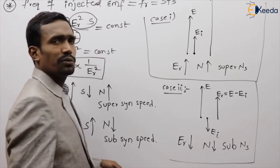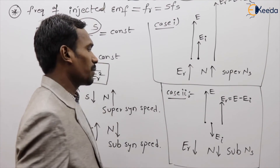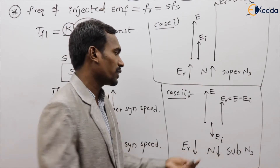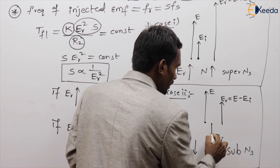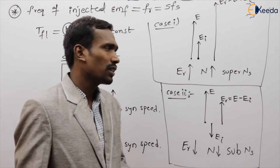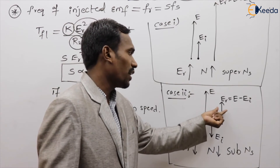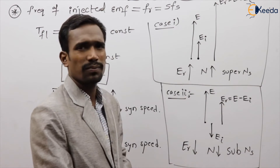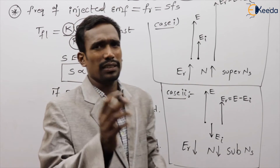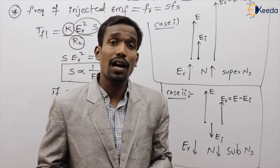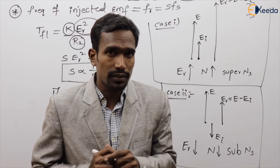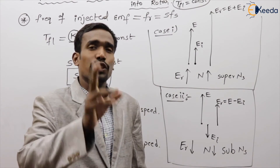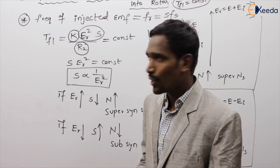To summarize the common cases: in Case 1, EMF is injected in phase with the rotor EMF, so ER increases and we get super-synchronous speed. In Case 2, EMF is injected exactly out of phase, so ER decreases and we get sub-synchronous speed. These are the two common cases; there are also two special cases.